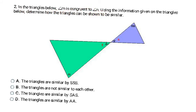In the next problem, angles M and N are congruent. Using the information on the triangles, we also identify vertical angles that are congruent. Since we have two pairs of congruent angles, the triangles are similar by AA.